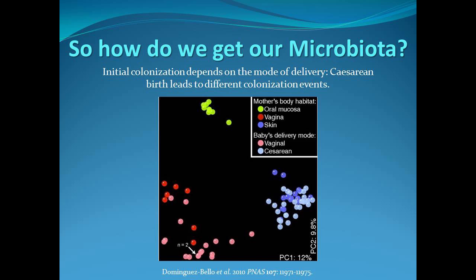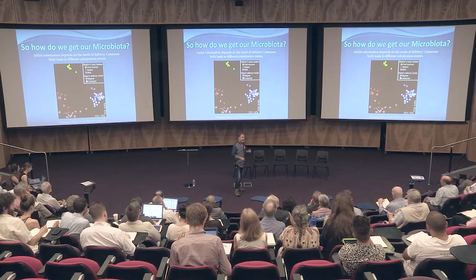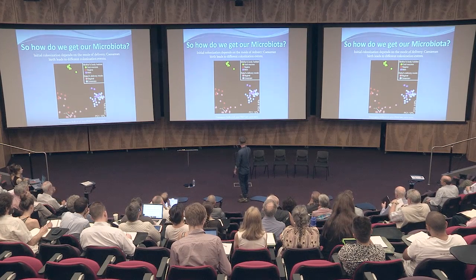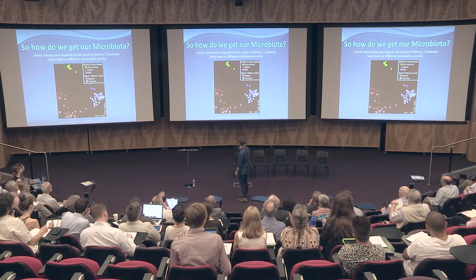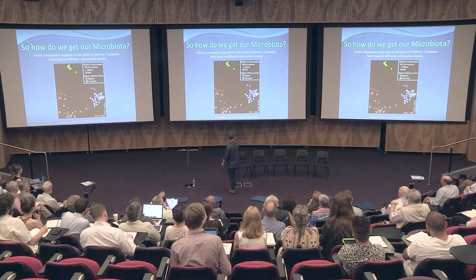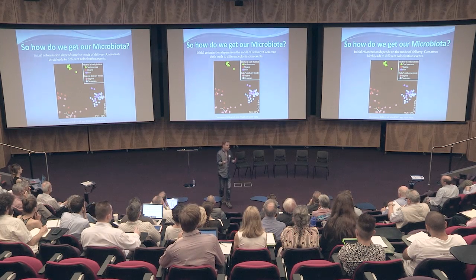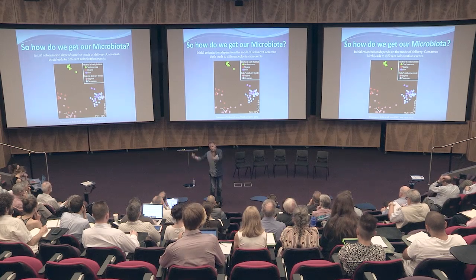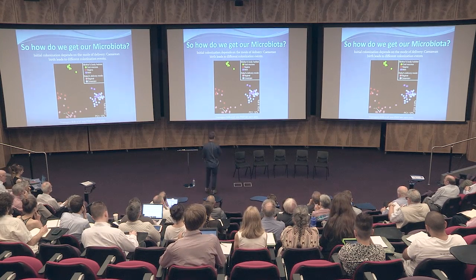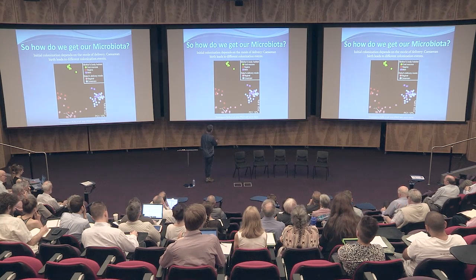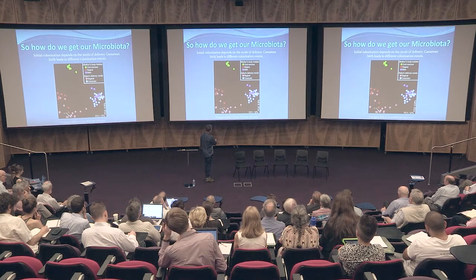How do we get this microbiota? In the uterus we're essentially sterile, and we get our first microbiota when we're born. How we're born makes a big difference. Newborns delivered vaginally have a microbiota similar to the vaginal microbiota - birth inoculates newborns. But if you deliver by caesarean, the microbiota of newborns is essentially the same as the mother's skin.